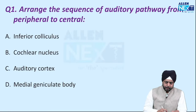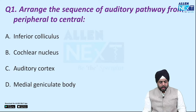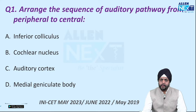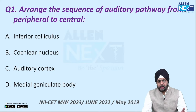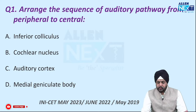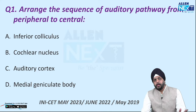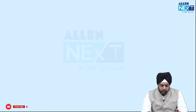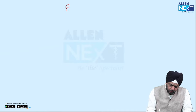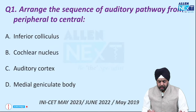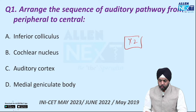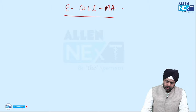Let me start with the first question: arrange the sequence of auditory pathway from peripheral to central. This question is a favorite of the INICET body and has been asked multiple times — in May 2023, June 2022, and May 2019. We know the sequence is E.CoLiMa. In fact, in the May 2023 exam the same question was repeated twice, so you can say it was INICET 2.